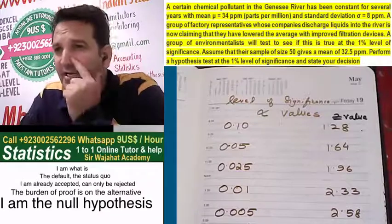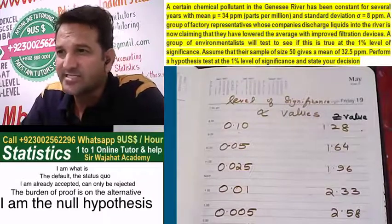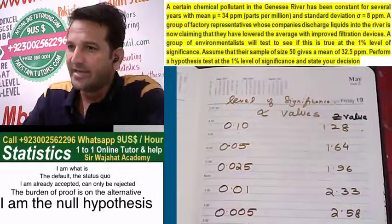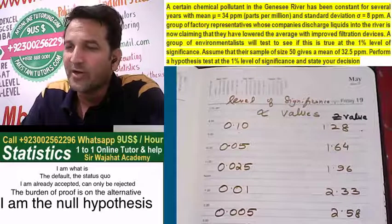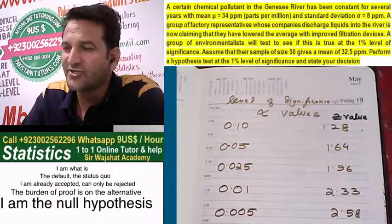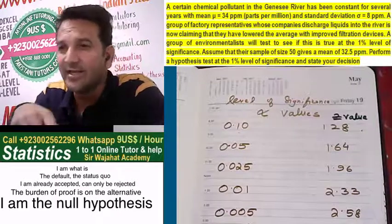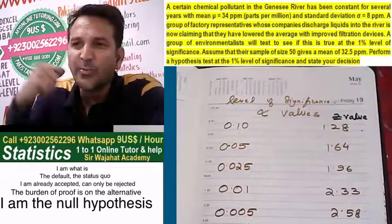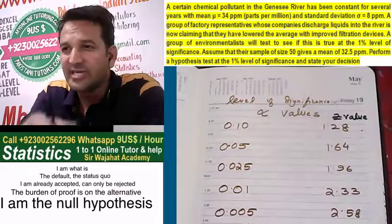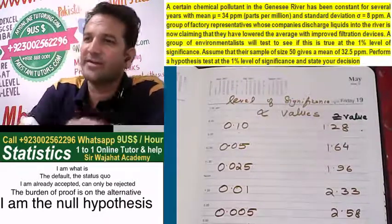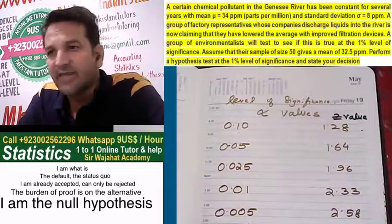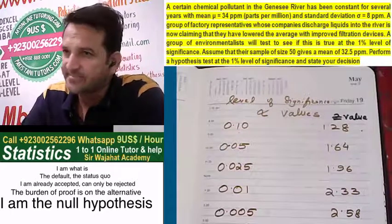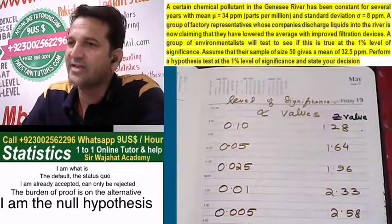A chemical pollutant in the Genesee river has been constant for several years with a mean mu = 34 ppm (parts per million) and standard deviation sigma = 8 ppm. A group of factory representatives whose companies discharge liquid into the river is now claiming that they have lowered the average with improved filtration devices. A group of environmentalists will test this at the 1% level of significance. A sample of size n = 50 gives a mean of 32.5 ppm. Perform a hypothesis test at the 1% level of significance and state your decision.